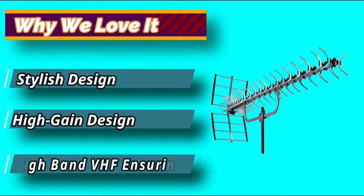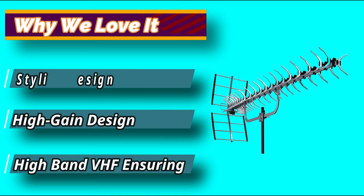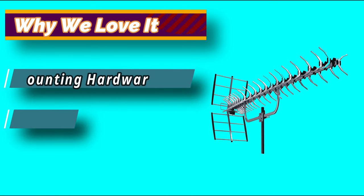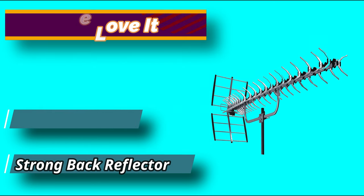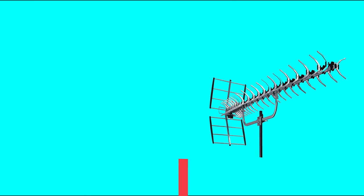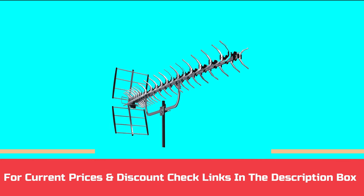The most prominent feature of this antenna is a black reflector. This also allows your TV to receive signals while getting rid of interferences. It can even surpass other long-range antenna's performance. For current prices and discount, check links in the description box.